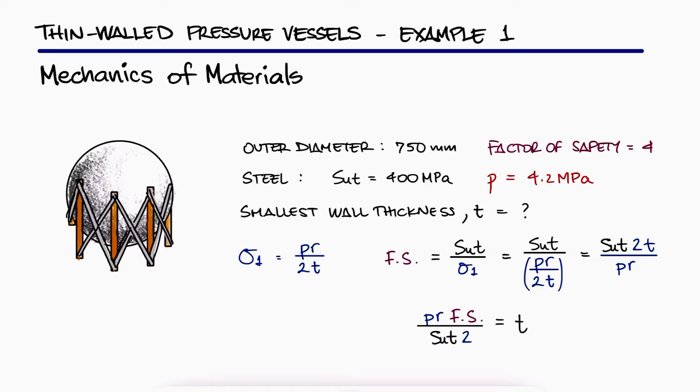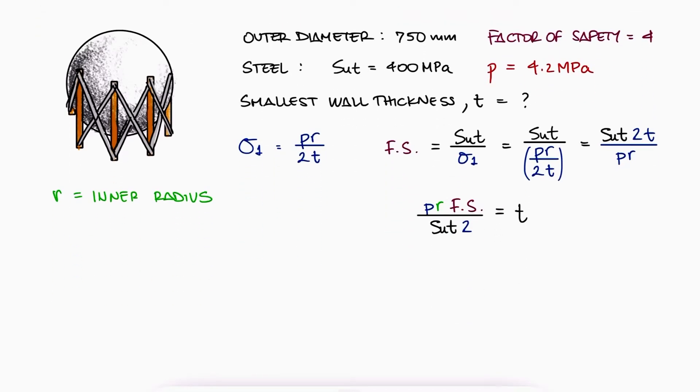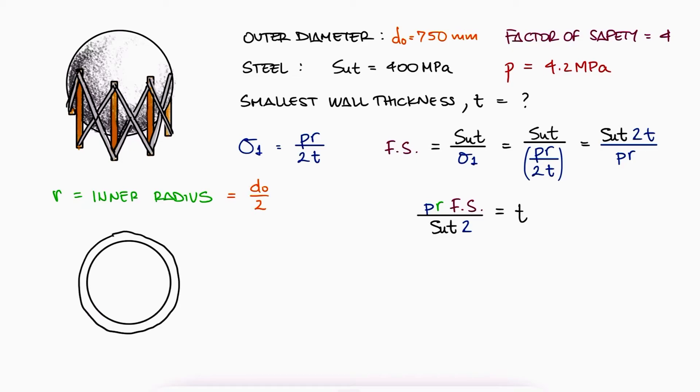However, remember that the radius refers to the inner radius, not the outer one. This means that the inner radius is the outer diameter divided by 2 minus 1 wall thickness.